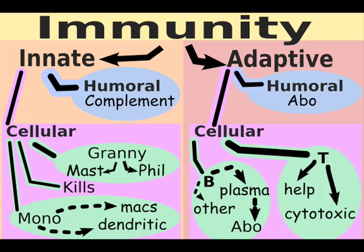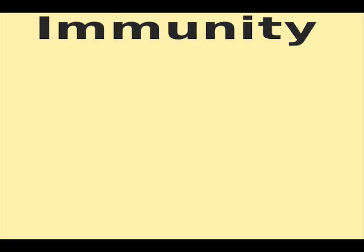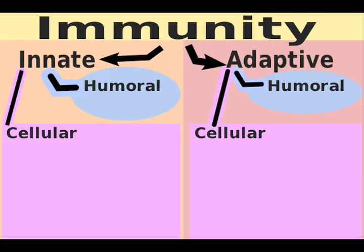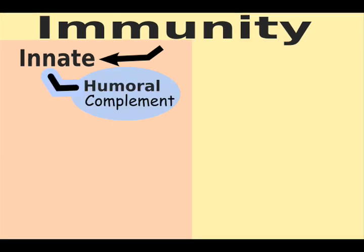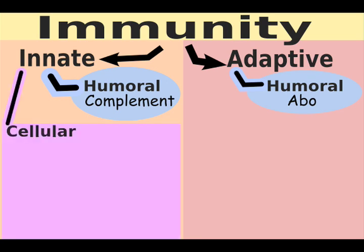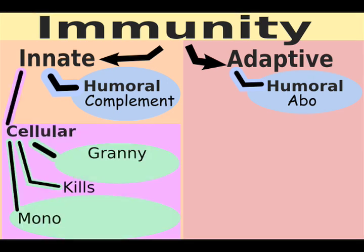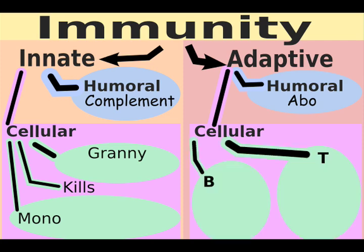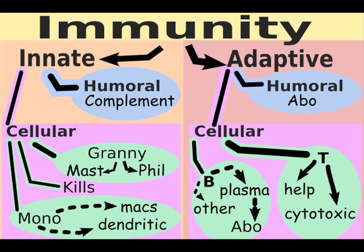To review: a scientific organization of the immune system is innate or adaptive, cellular or humoral — four quadrants. Innate humoral involves complement; adaptive humoral involves antibodies; innate cellular involves 'mono kills granny'; adaptive cellular involves B and T cells, with T cells either helping or killing. Now that you can draw this diagram, you can continue your immunology learning without drowning in terminology soup.